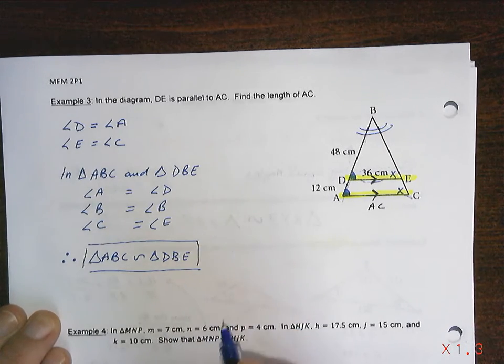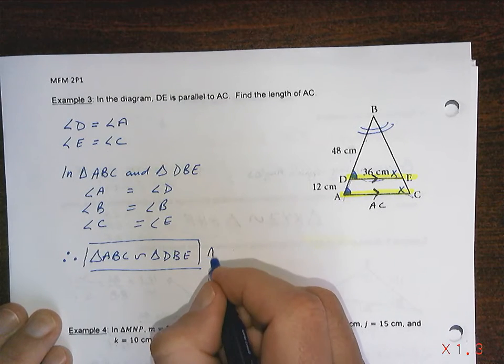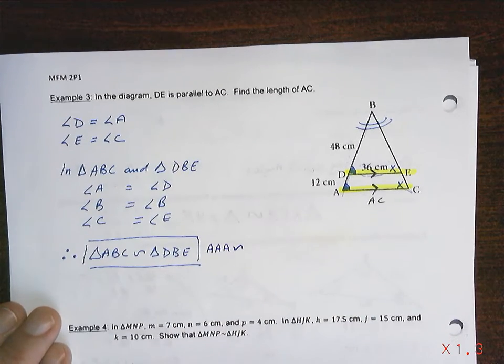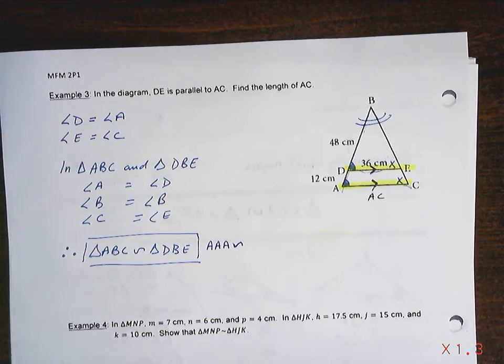Triangle ABC is similar to triangle DBE. How do you know? Because you've proven angle, angle, angle similarity. That's what that means. You've shown that all three corresponding angles are equal.